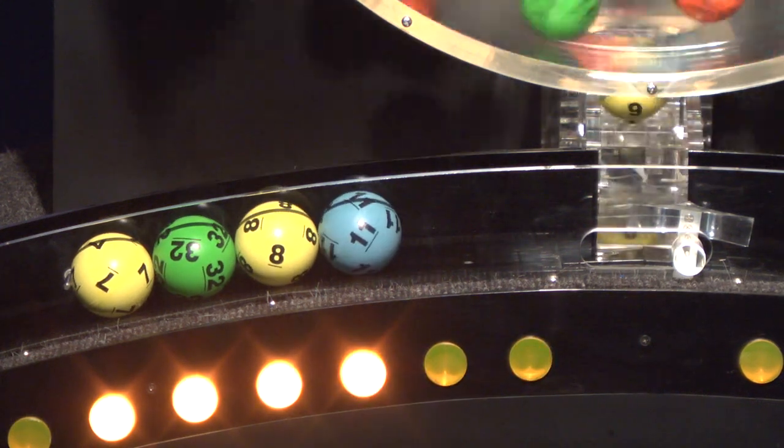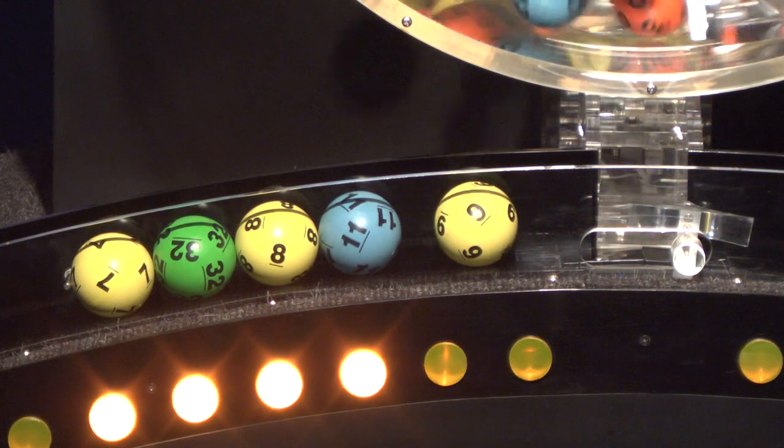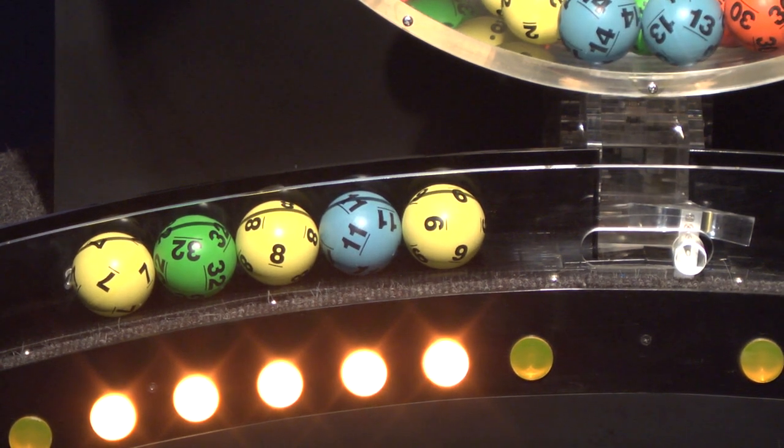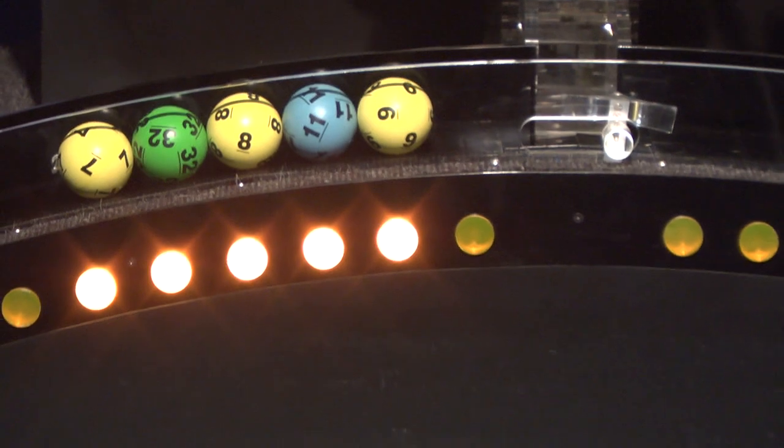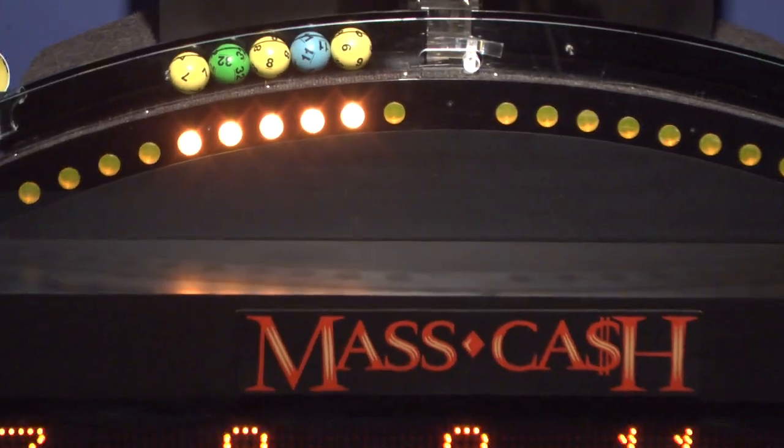Up next is 11, and the final ball in this sequence is number nine. Once again, the winning MassCash numbers for Tuesday, October 9th are seven, eight, nine, eleven, and 32.